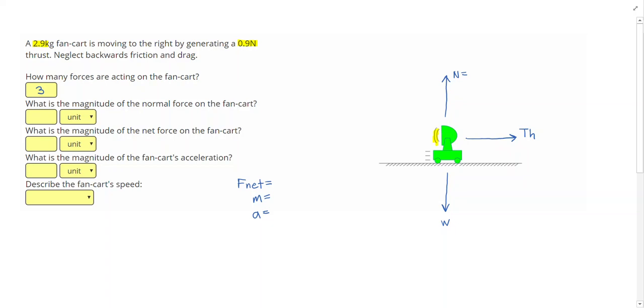So let's start filling out some given. 2.9 kilograms. Whenever we see kilograms, we know that kilograms measure mass. So I'm going to write in 2.9 kilograms for the mass. And it says 0.9 newtons is our thrust. So 0.9 newtons is our thrust.